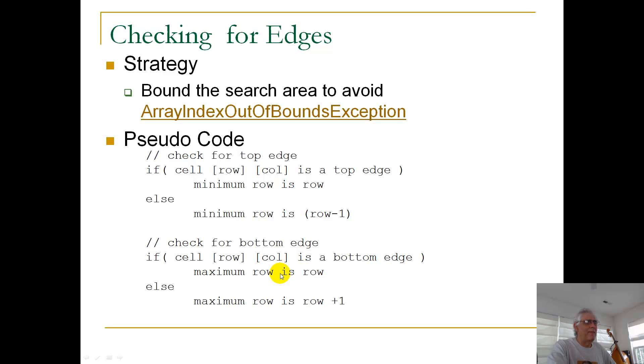The maximum row I can check in is row. What does that mean? What was our strategy? We checked above, row I'm in, and row below.